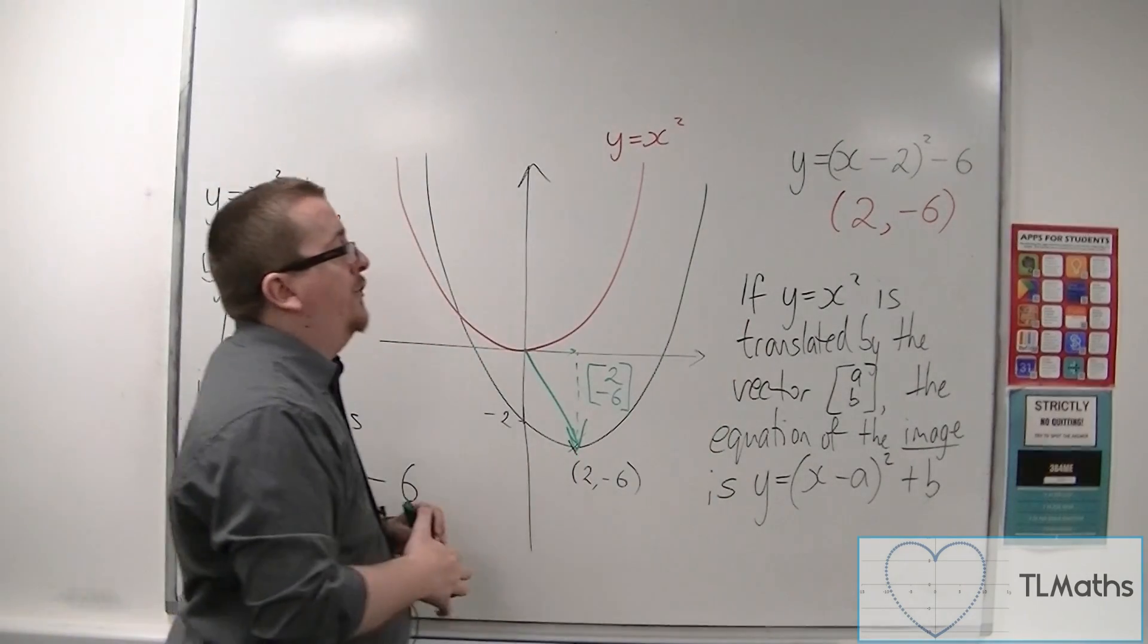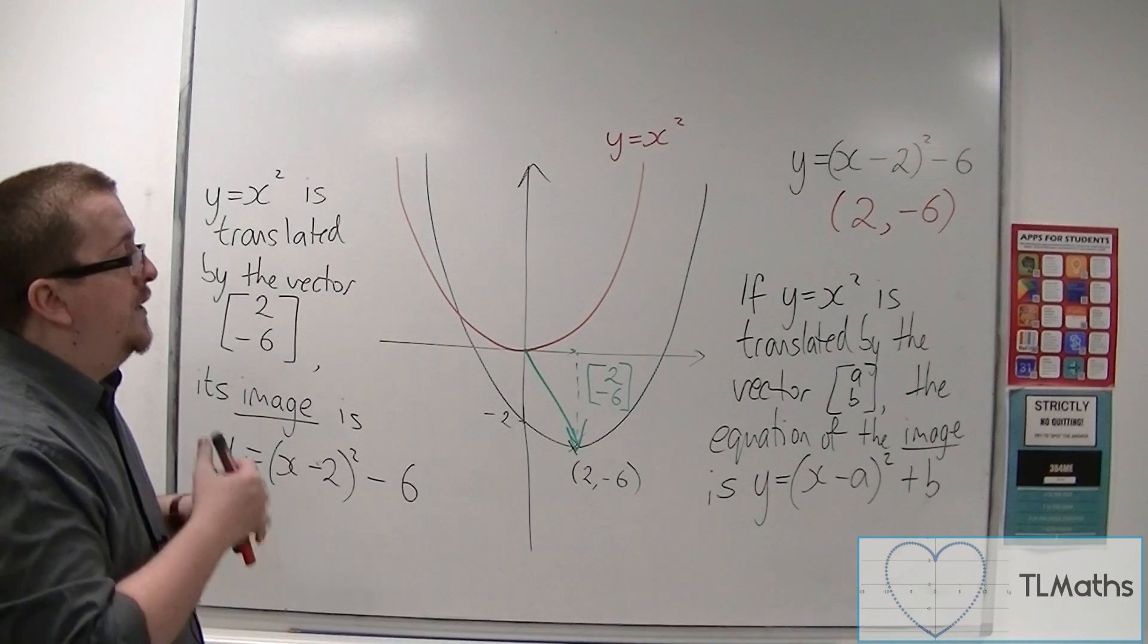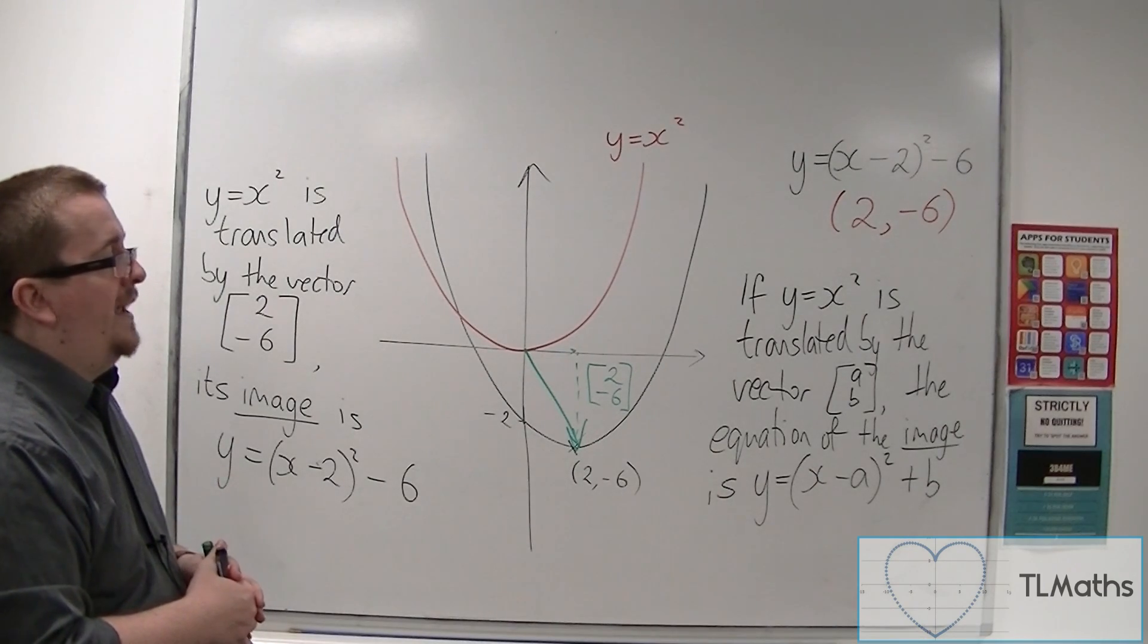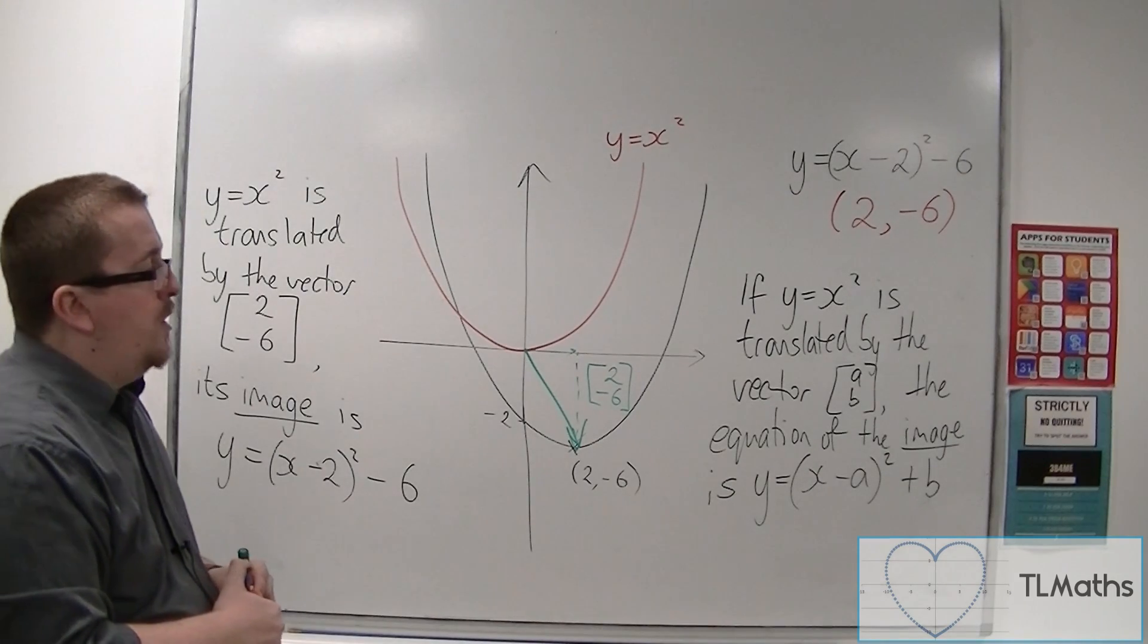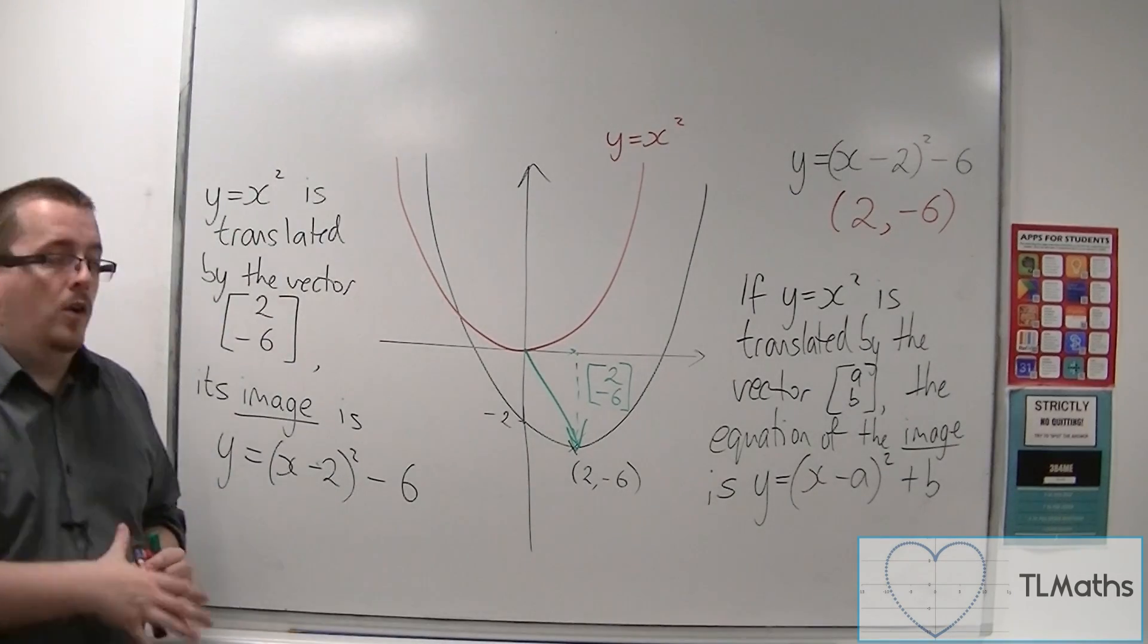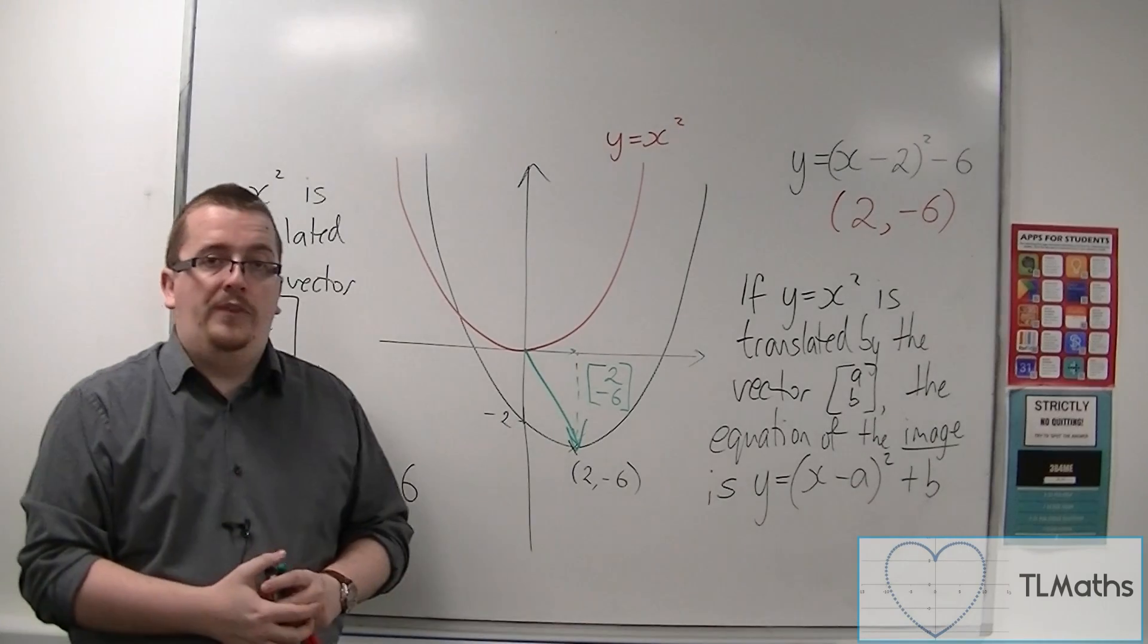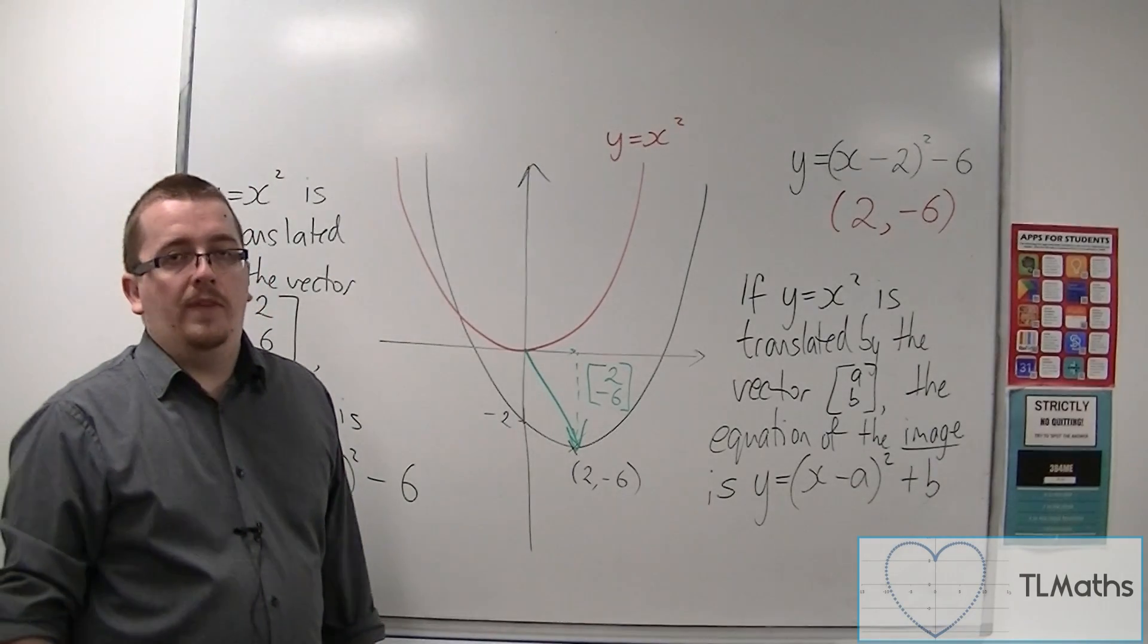But if y equals x squared is translated by the vector a, b, the equation of the image is y equals x minus a squared plus b. And we could use this idea to describe the transformation of many different curves now. And I'm going to show you an example of this in the next video.